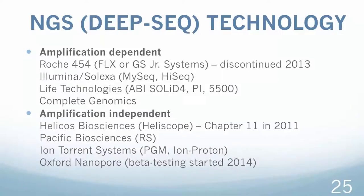The existing NGS platforms could also be divided into amplification dependent and amplification independent technologies, each of them having certain advantages and disadvantages. The typical representatives of the amplification dependent technologies are Roche, Illumina, Life Technologies and Complete Genomics. As the name implies, the common feature of these technologies is that samples have to be amplified prior to be sequenced. The amplification independent technologies have been developed by such companies as Helicos Biosciences, Pacific Biosciences, Ion Torrent Systems and Oxford Nanopore.